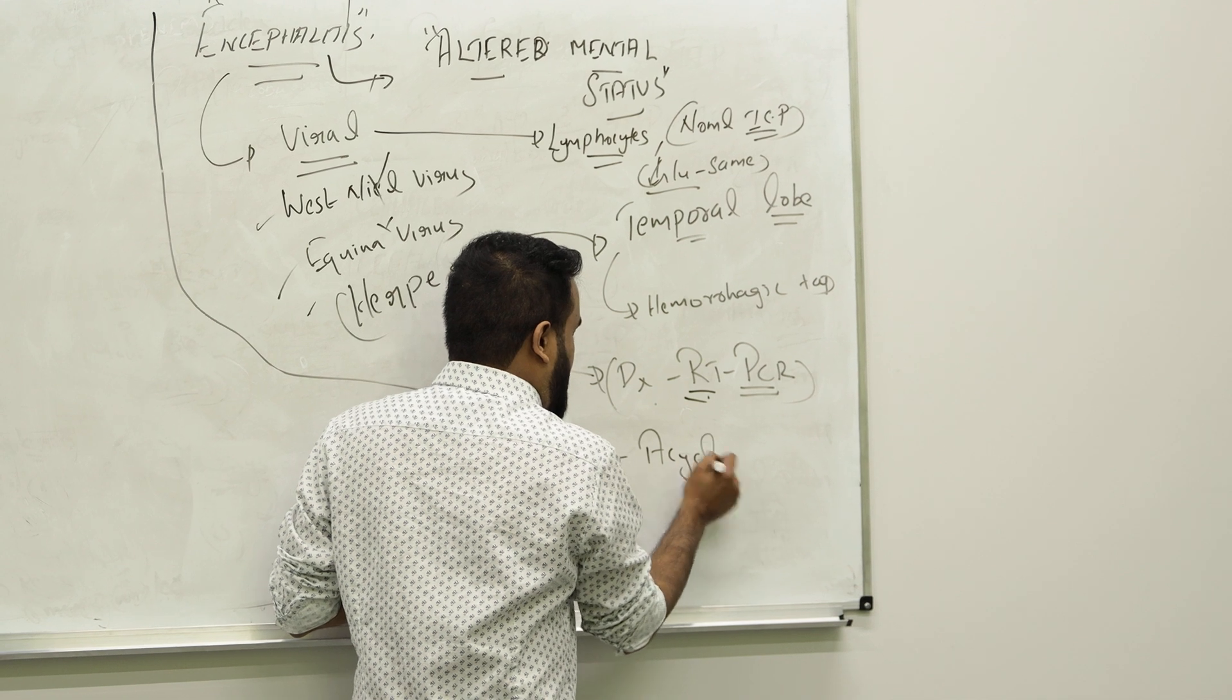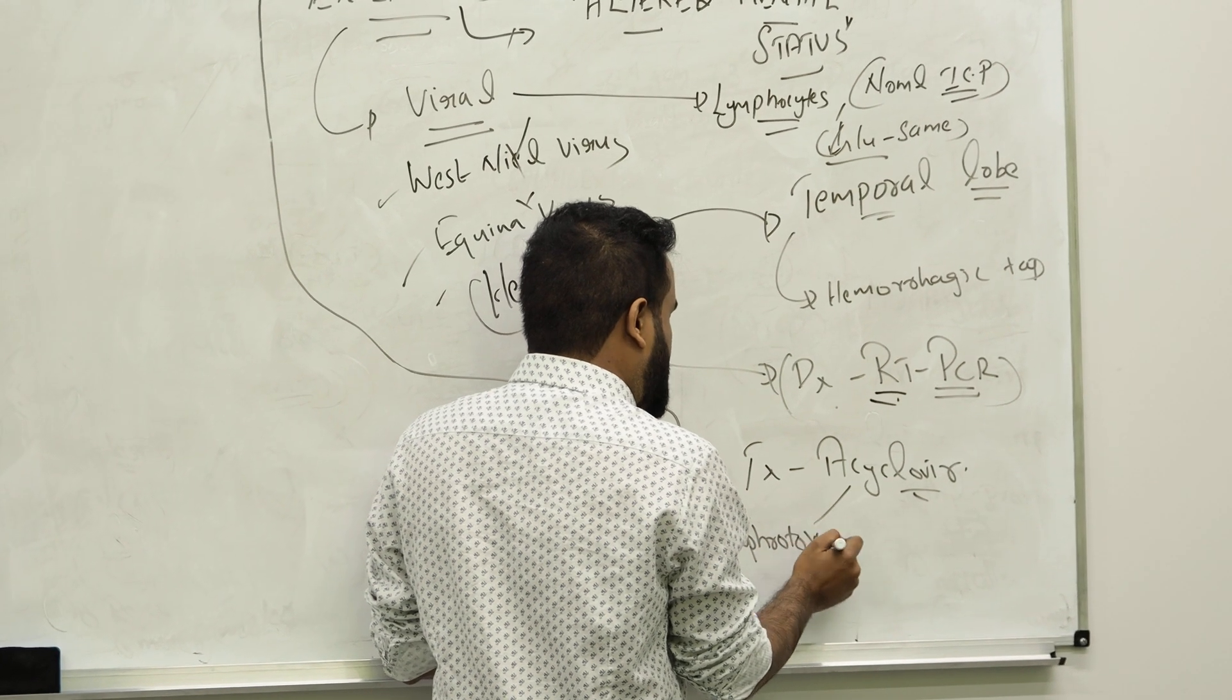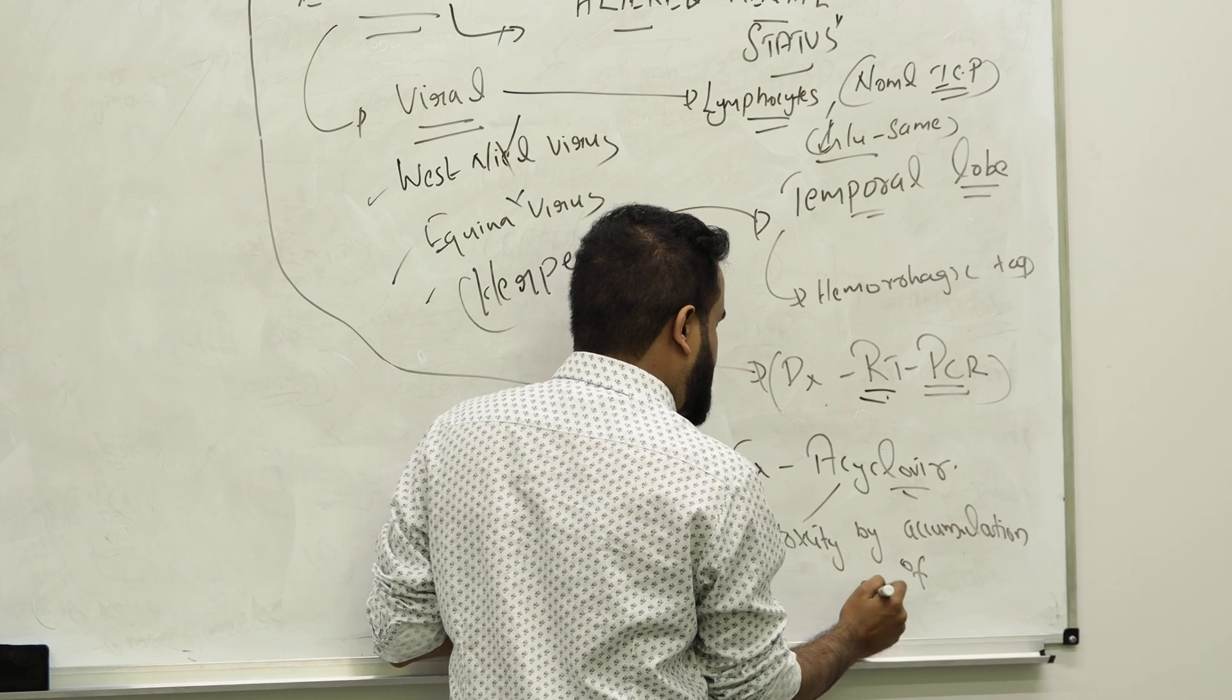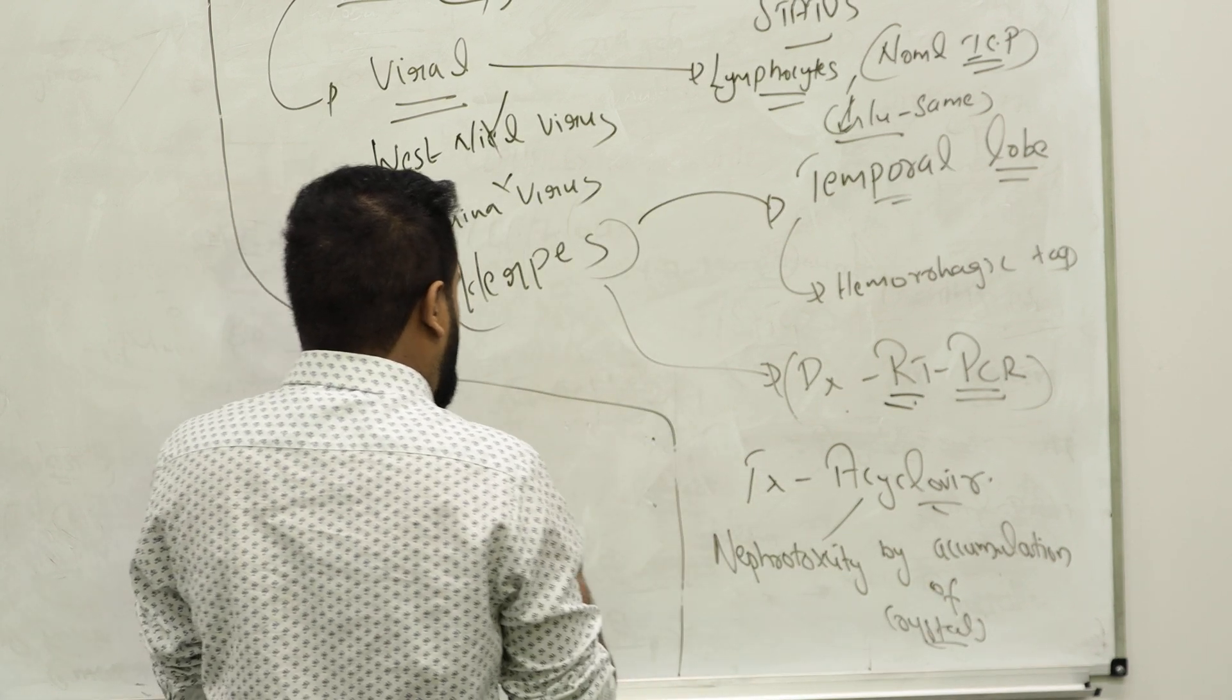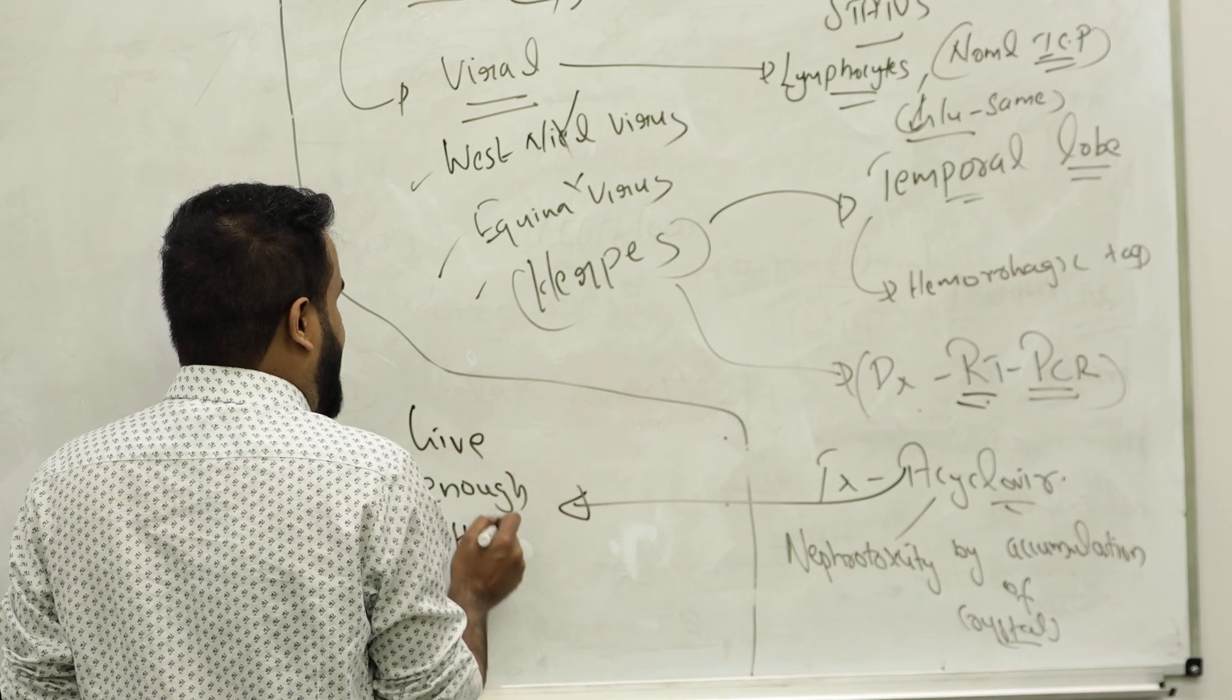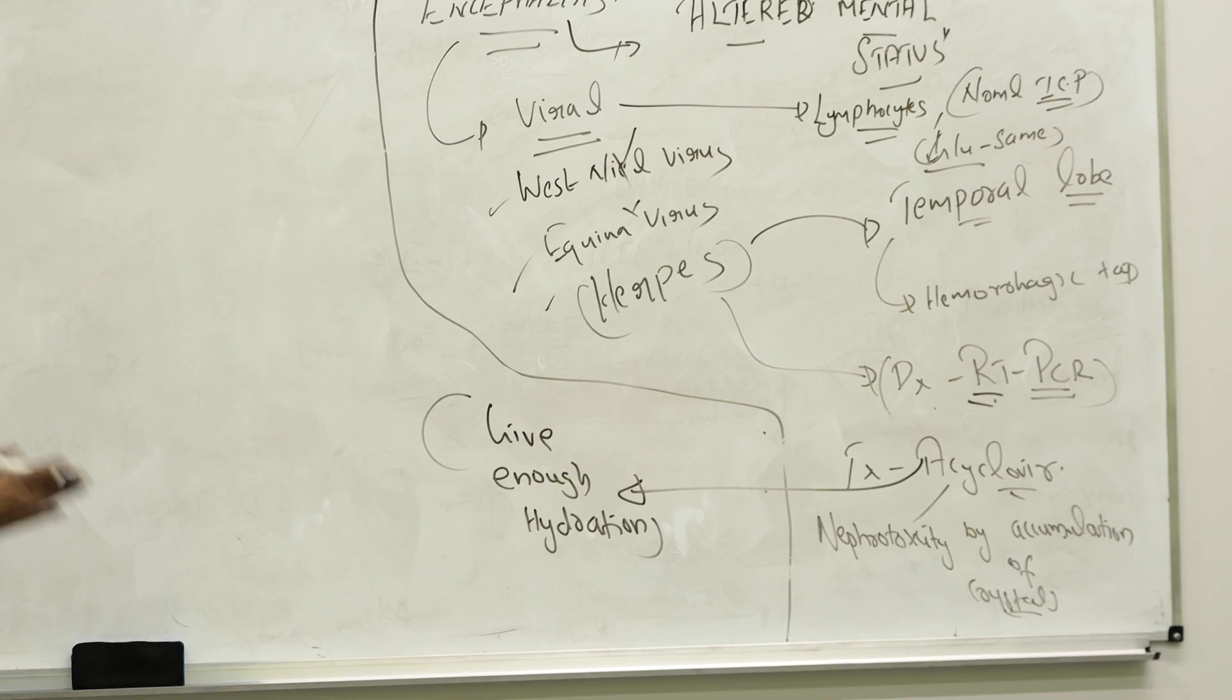Treatment for herpes normally we give acyclovir. But remember everyone, acyclovir has a side effect—it can cause nephrotoxicity by accumulation of crystals. So always what you do, you include along with acyclovir, give enough hydration. Make sure you are a good doctor, you give enough hydration or the patient can have already viral encephalitis and they will have nephrotoxicity also.